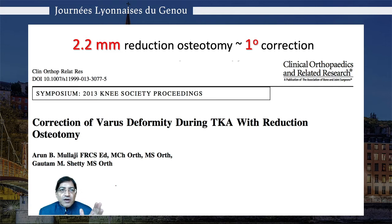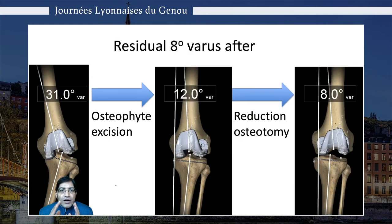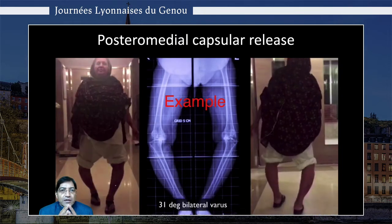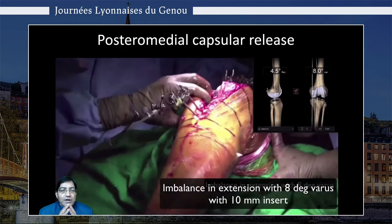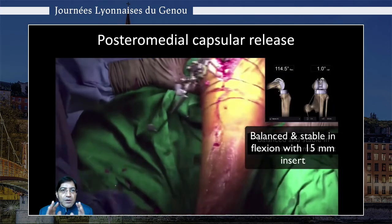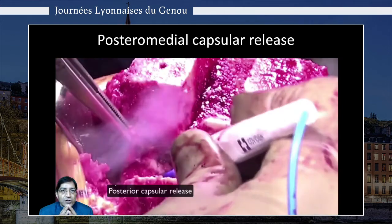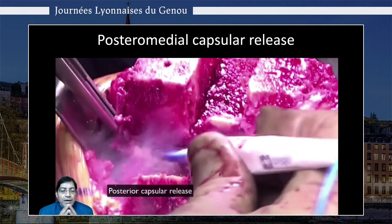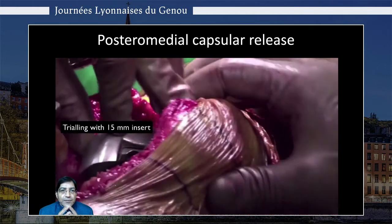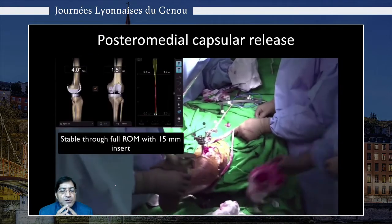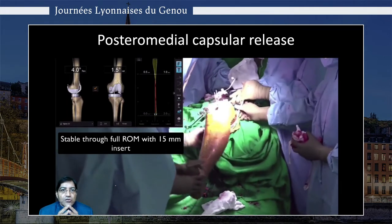In this 31-degree varus deformity, after removing the osteophytes it's down to 12 degrees. After reduction osteotomy it's down to 8 degrees. That's where we do a posterior medial capsular release, like in this patient who is imbalanced in extension but perfectly well balanced in flexion. With a 15 mm insert it's balanced in flexion, so we remove the posterior medial capsule and then insert a 15 mm trial — now we have complete stability in extension right through the range of motion.